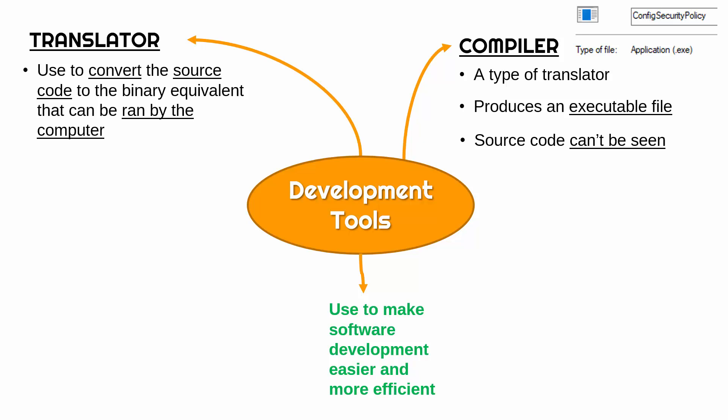Not all translators are like this. A translator called an interpreter needs to have the source code on your computer, so open source software could use an interpreter. Closed source, however, must use a compiler.